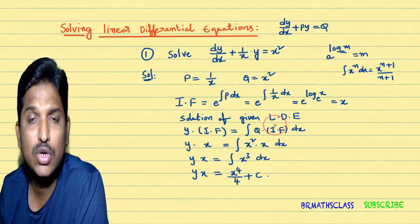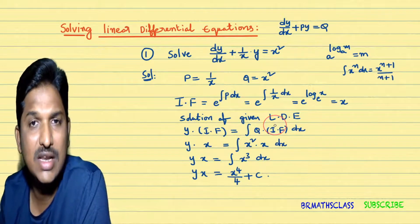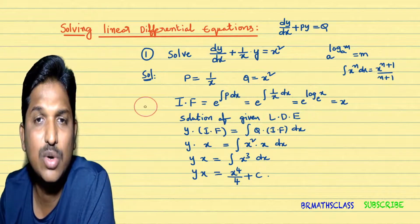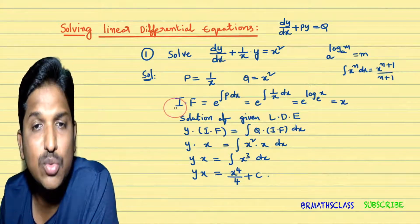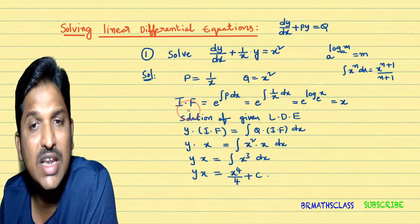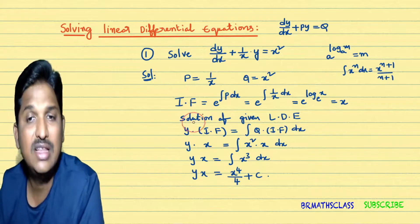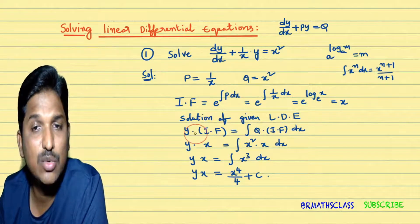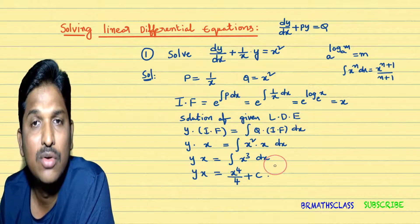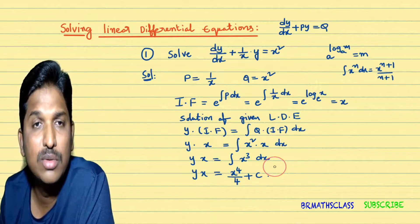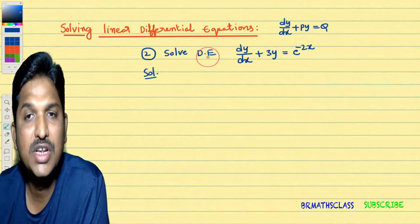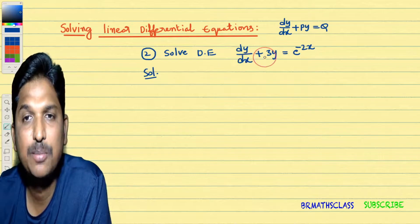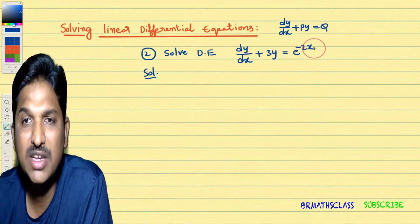Remember, we have total three steps to solve a linear differential equation. Step 1: identifying the functions p and q. Step 2: calculating the integrating factor. Step 3: write the solution of the linear differential equation and simplify. Now we will learn one more problem. Second problem: solve the differential equation dy by dx plus 3y equal to e power minus 2x.